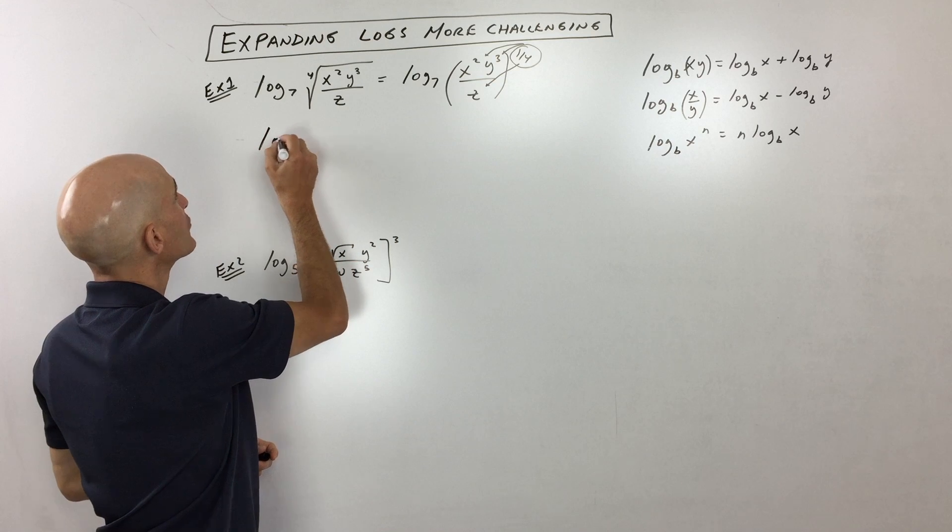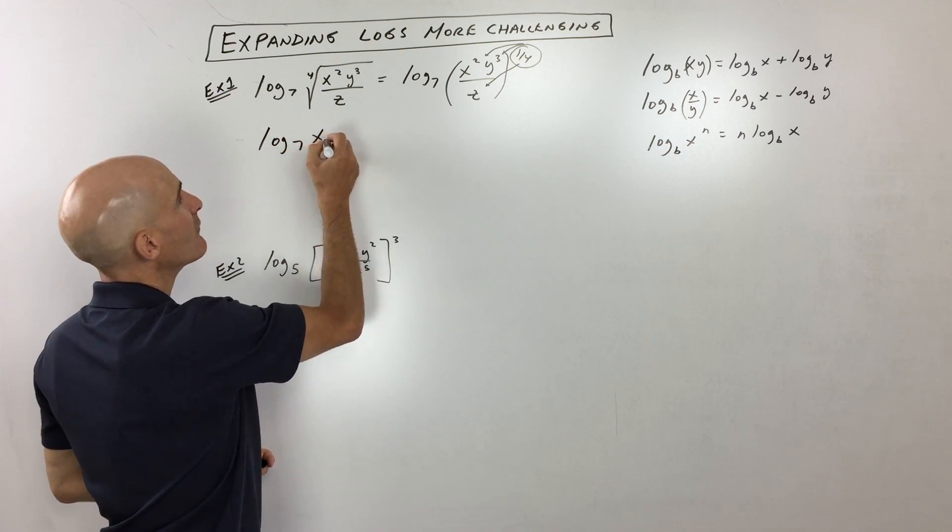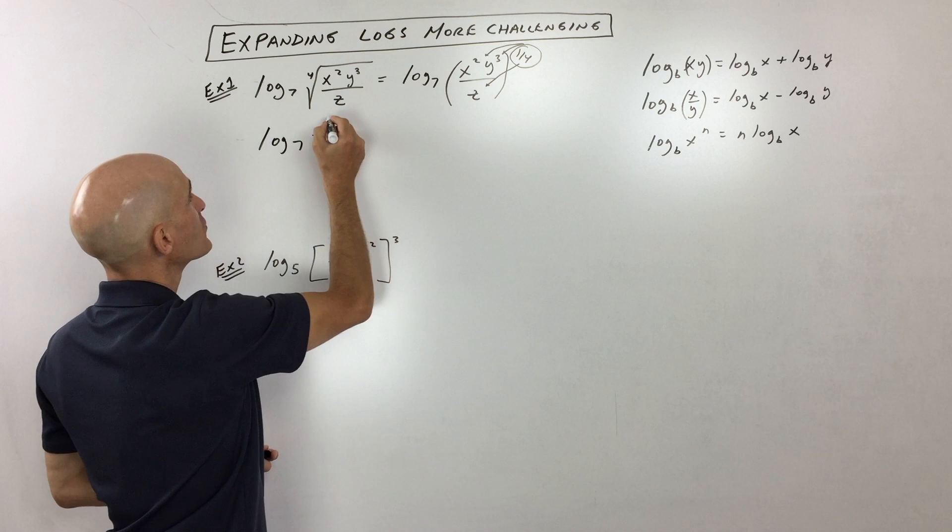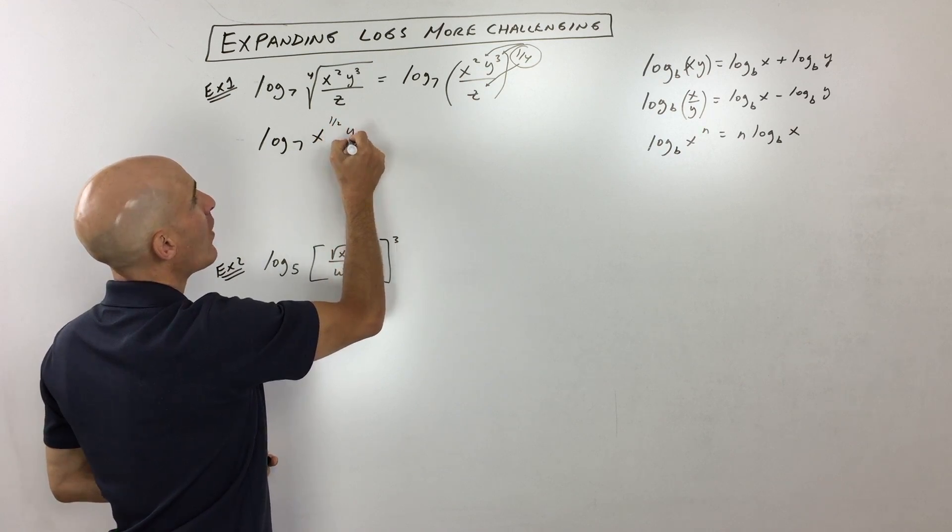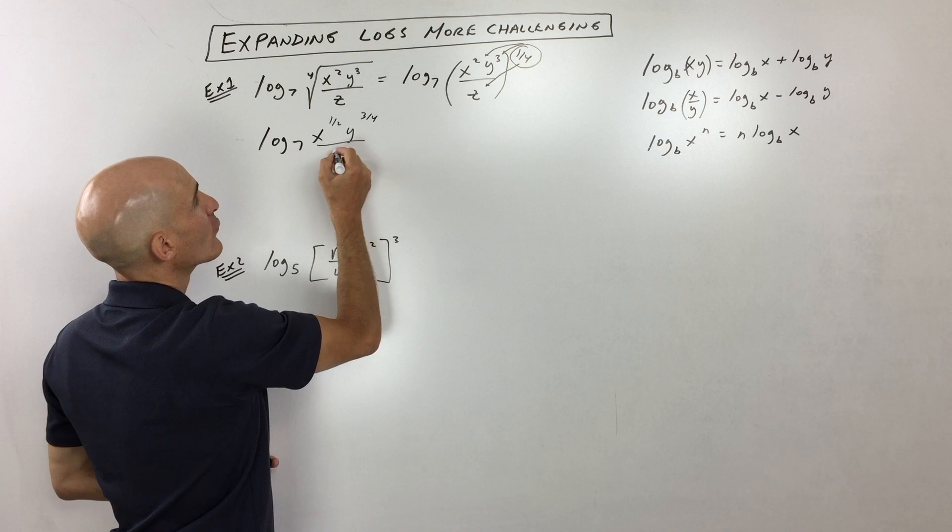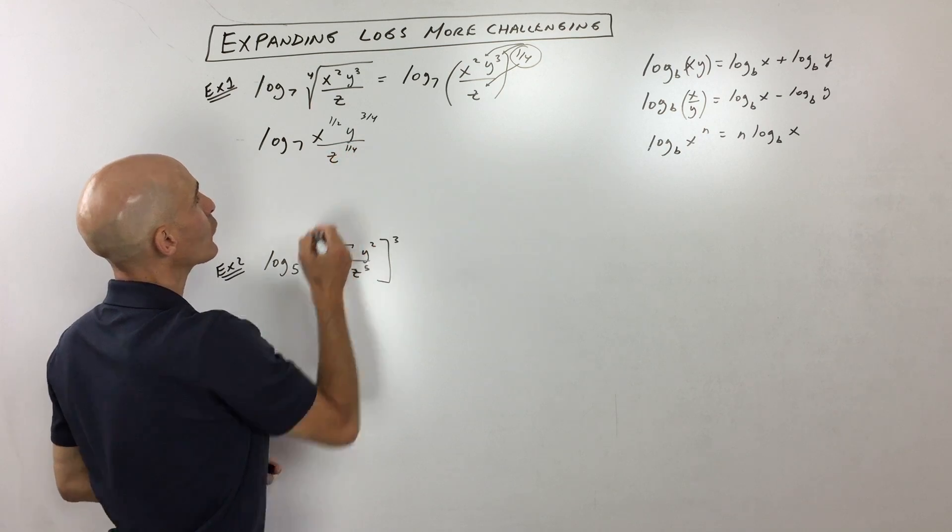So what we can do now is we can write this as log base seven of x to the two-fourths, which is actually one-half, y to the three-fourths, all over z to the one-fourth.